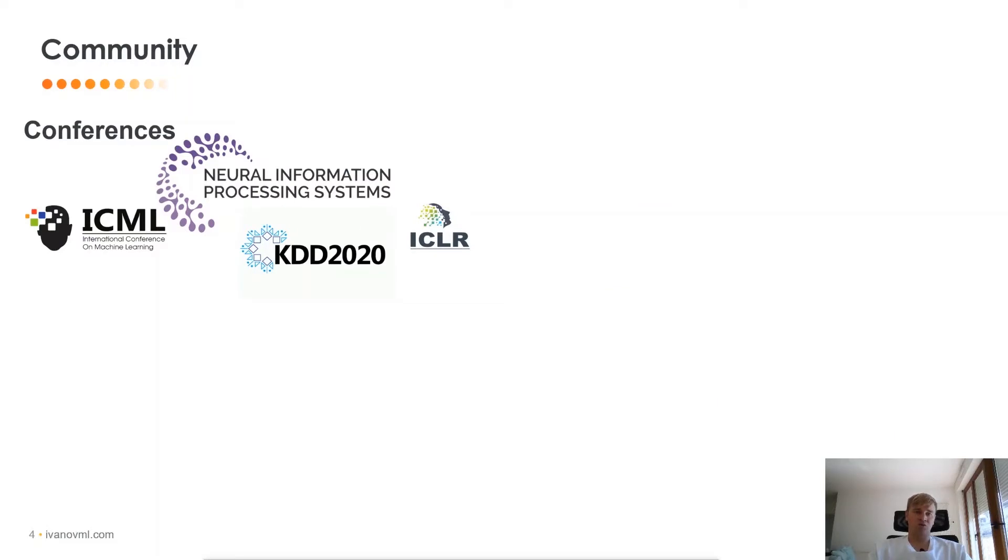Now, where can you learn about this field? Where can you meet people? What is the community of graph machine learning? Well, first of all, it's the biggest conferences: ICML, NeurIPS, ICLR, KDD. So for example, at KDD this year, we had 30% of papers related to graph machine learning. And at ICML, NeurIPS and ICLR, this number is around 15%, which is still a very huge amount of papers.